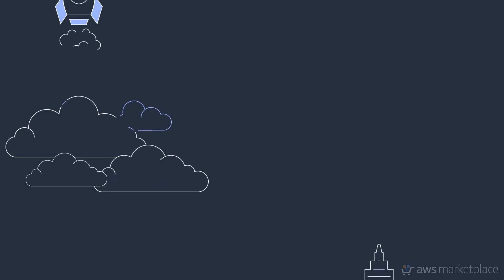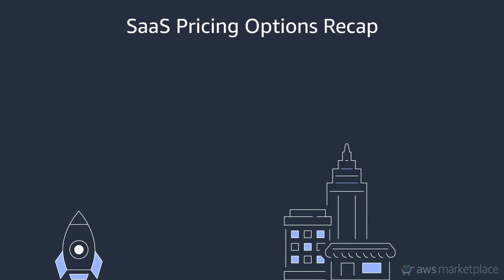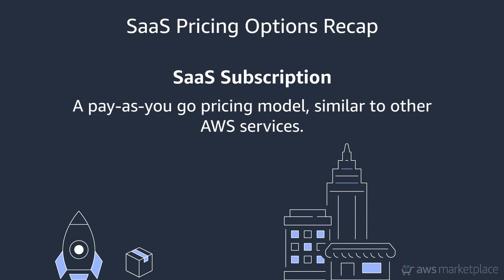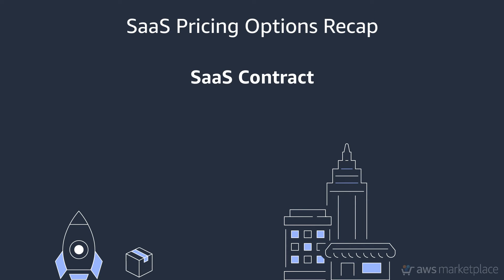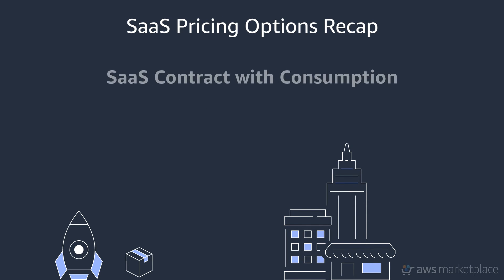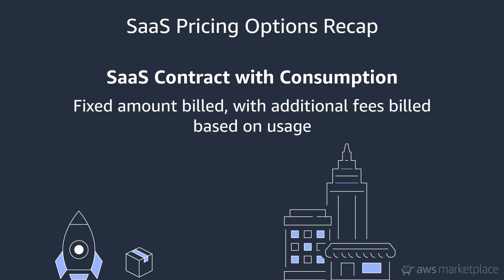Throughout this video, we covered the three SaaS pricing options available to you as a seller in AWS Marketplace: SaaS Subscription, a pay-as-you-go pricing model familiar to your customers because it's similar to how many other AWS services are billed; SaaS Contracts, payments billed in advance for the use of your software; and SaaS Contracts with Consumption, a hybrid of the first two, allowing AWS to charge a fixed amount and add additional usage fees based on consumption.